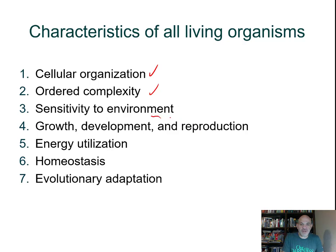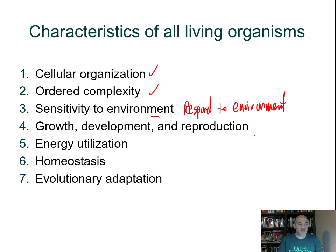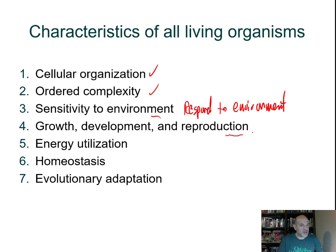Living things respond to stimuli — they are sensitive to the environment. For example, tree roots grow down toward gravity and shoots grow upward toward light. Living things also grow, develop, and reproduce. Even a simple cell divides; the new cells are smaller, then grow and mature. However, these characteristics are not always unique to living things — for example, mineral crystals can grow but are not alive.